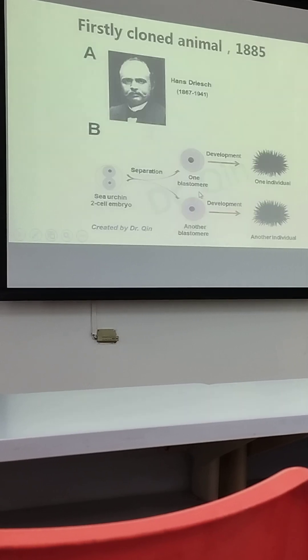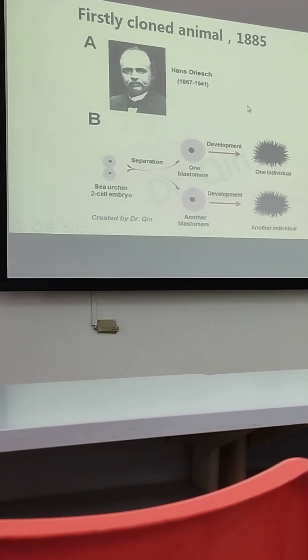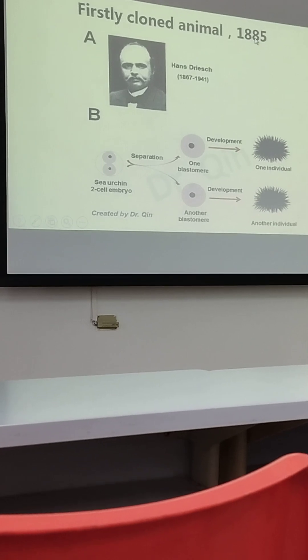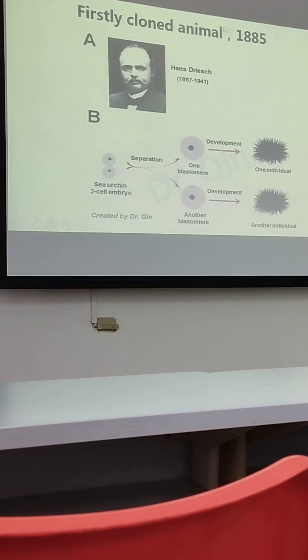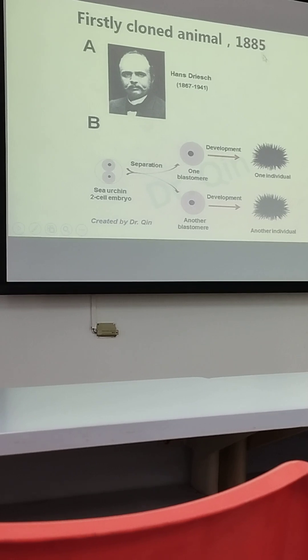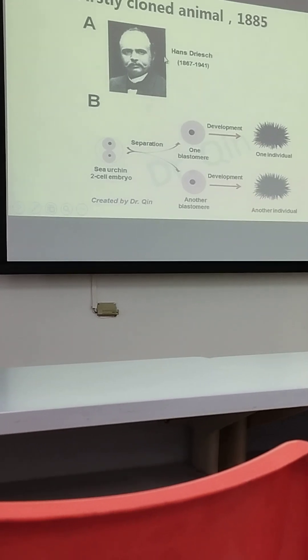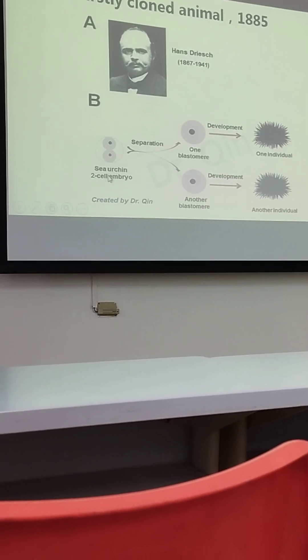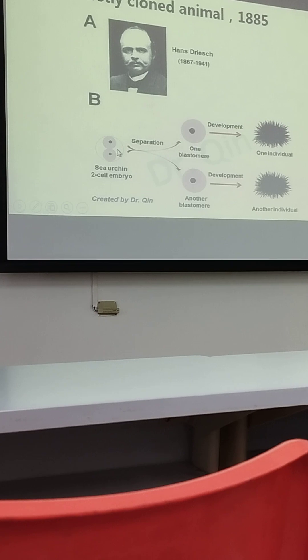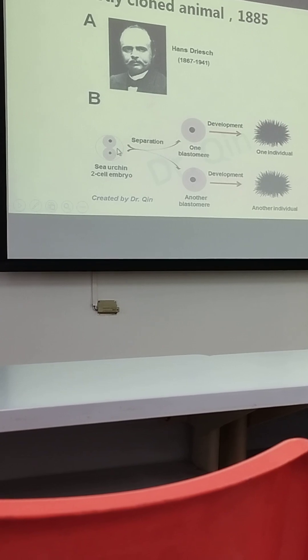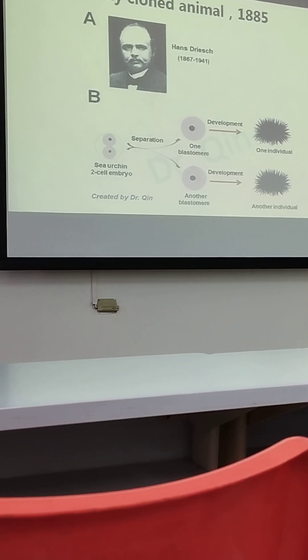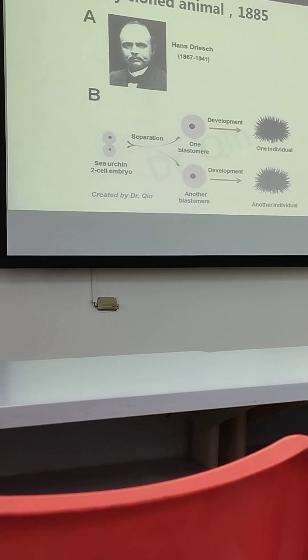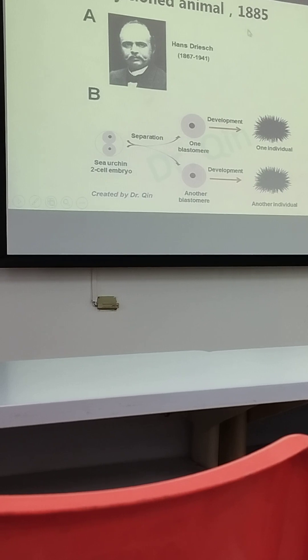So actually, when we go back to cloned animals, we can trace to 1885, many years ago. And this scientist, Hans Driesch, firstly split the sea urchin two-cell embryo, and separated these two cells, and each one can develop into an individual urchin. So this is the first cloned animal in 1885.